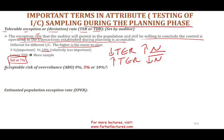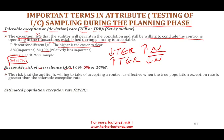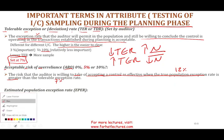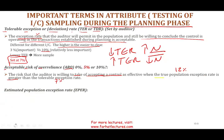The second concept is the Acceptable Risk of Over-reliance (ARO). This is the risk the auditor is willing to accept of concluding a control is effective when the true population exception rate is actually greater than the tolerable exception rate. For example, TER is set at 7%, but the true population exception could be 12% — you don't know, because you're only sampling.